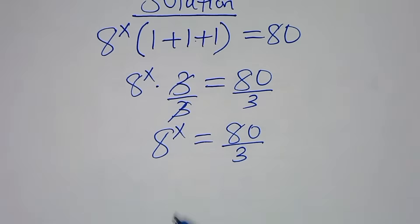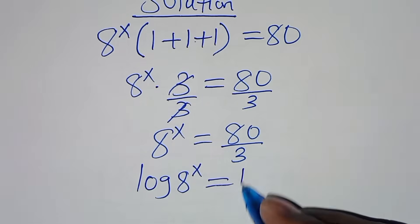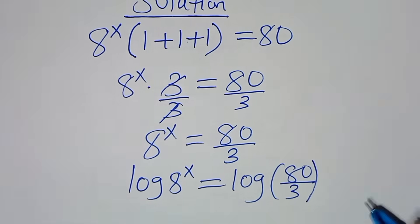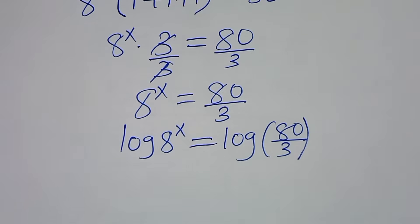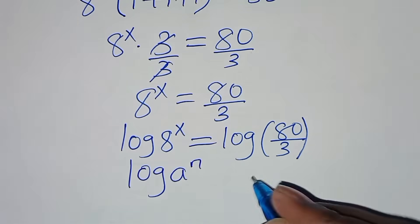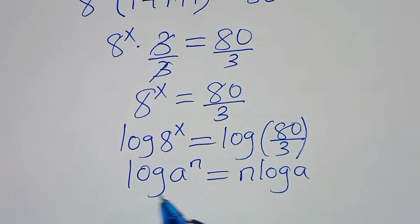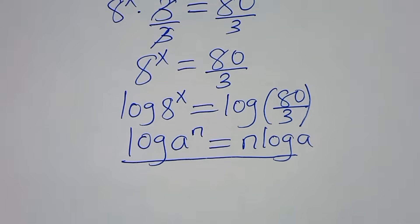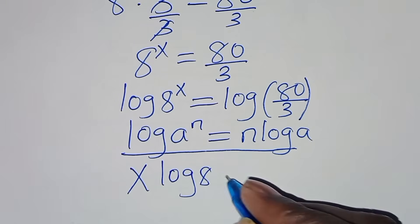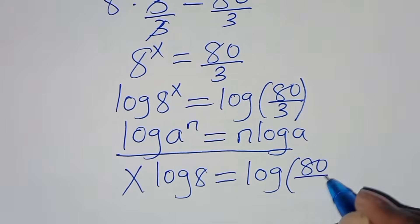The next step: let's introduce the natural logarithm on both sides. So we'll have log(8^x) equals log(80 divided by 3). Now, log(8^x) is in the form of log(a^n), which we can express as n·log(a). Applying this power rule property of logarithm, log(8^x) becomes x·log(8), and this equals log(80/3).